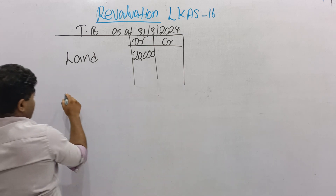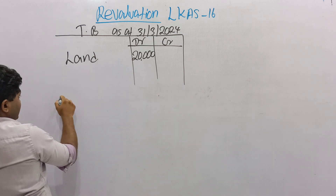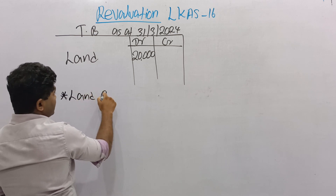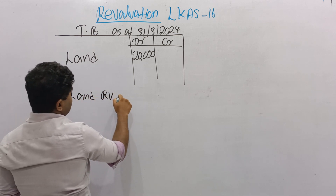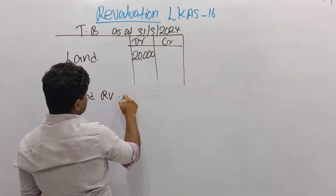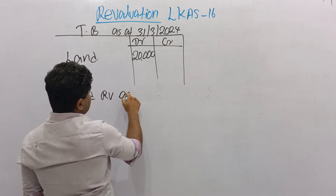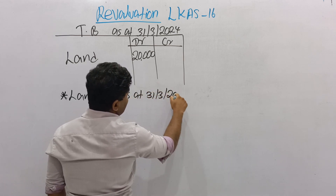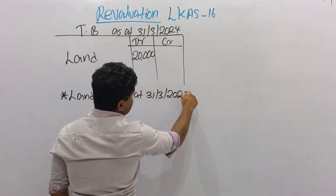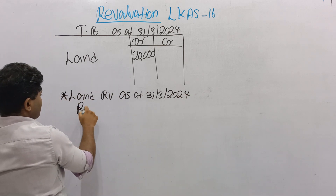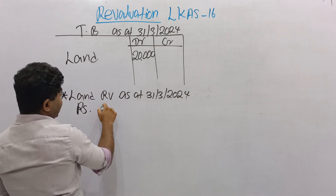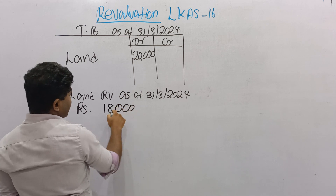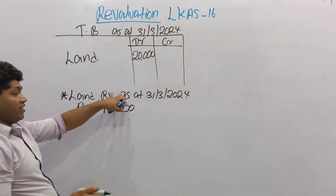An adjustment is given — a Revaluation adjustment. Land Revaluation: as at 31 March 2024, end of the accounting period, the value equals Rupees 18,000. That is the end result of the Land Revaluation.